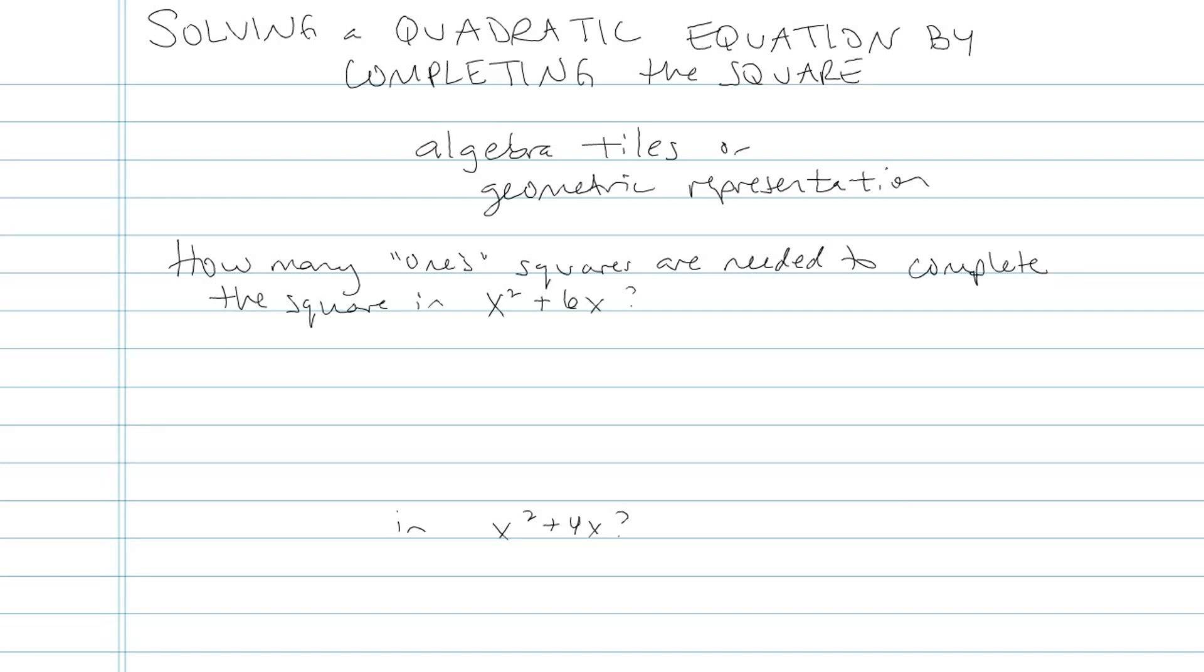The problem that completing the square does is it says how many ones would be needed to complete the square in something like x squared plus 6x.